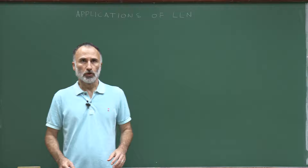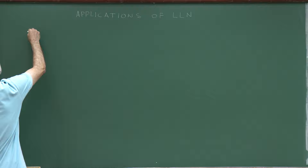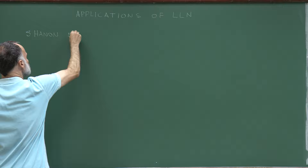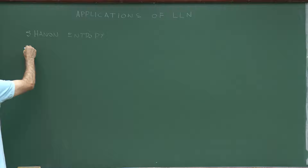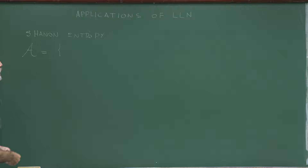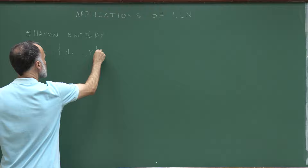In this lecture I will present some applications of the law of large numbers. I will start with Shannon entropy. We'll start with a set A, which is a finite set of letters, represented by numbers 1 up to R.